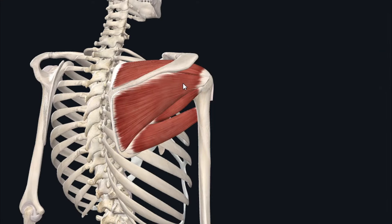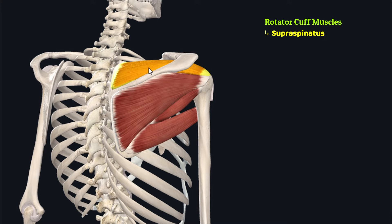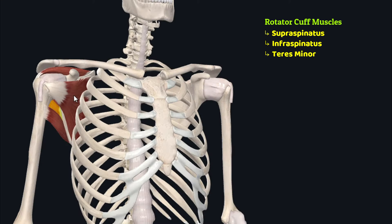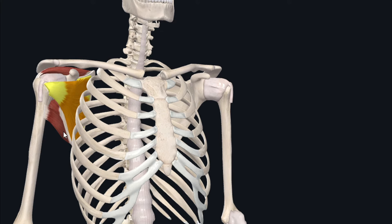Four of these six muscles attach to the capsule of the shoulder joint and make up the rotator cuff: the supraspinatus, infraspinatus, teres minor, and subscapularis. We will now discuss each of these six scapular region muscles individually.